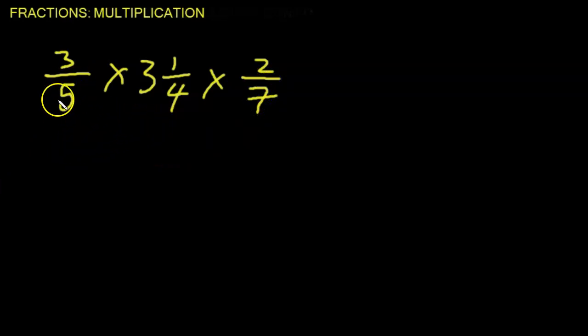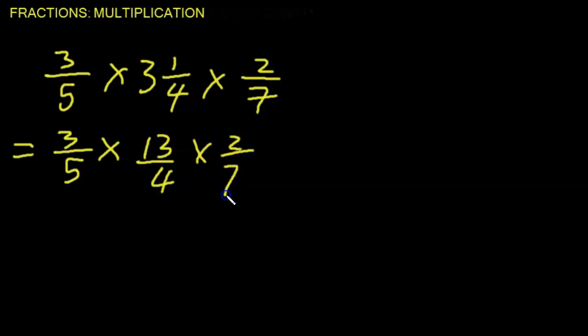So again, we convert all the mixed fractions to improper fractions. So 3 over 5, we can keep that. It's in the form we want it. And 3 and a quarter, we can convert that. 4 times 3, 12. 12 and 1, that's what? 13 over 4. And then 2 over 7 is in the form that we want it.